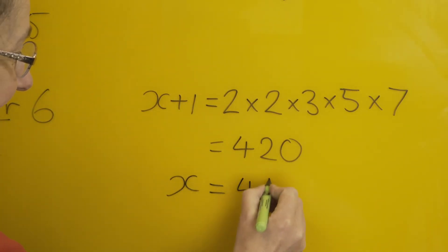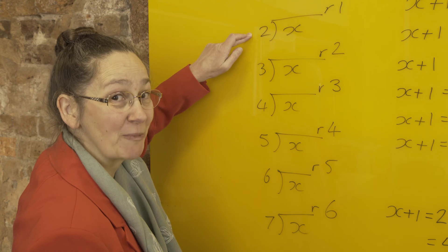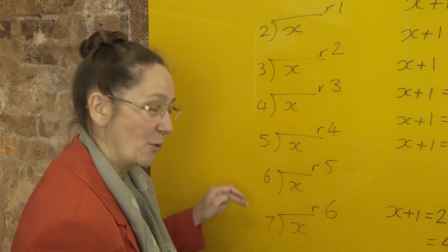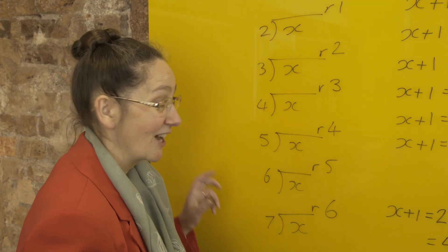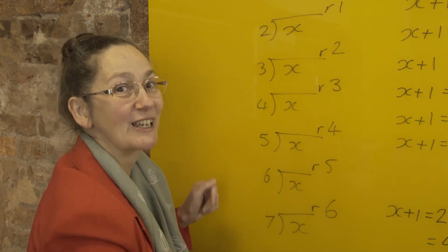And if you divide 419 by 2, you'll find you've got a remainder of 1. Divide it by 3, you've got a remainder of 2, and all of the rest. Try it for yourself to check. So 419 is the smallest number where all of this is true.